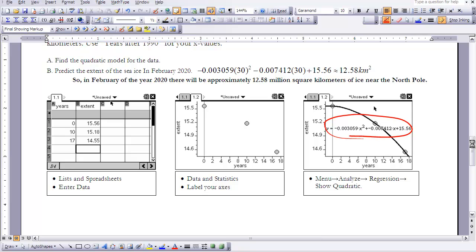So now we can use that quadratic equation to predict what the extent of the sea ice will be in February of 2020. So input 30, because 2020 is 30 years from 1990, so we'll plug that in. And we get 12.58 kilometers squared. So that's not to say there will be 12.58, but we're using the model that we've created to predict what it might look like if it continues to follow the same pattern.